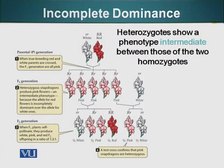In this pattern of inheritance, heterozygotes show an intermediate phenotype, sort of like blending. The example given here is true breeding white flowers crossed with true breeding red flowers. The flowers are snapdragons — people may be familiar with them by the name Kutafool. When these two plants are crossed, the F1 generation is pink.